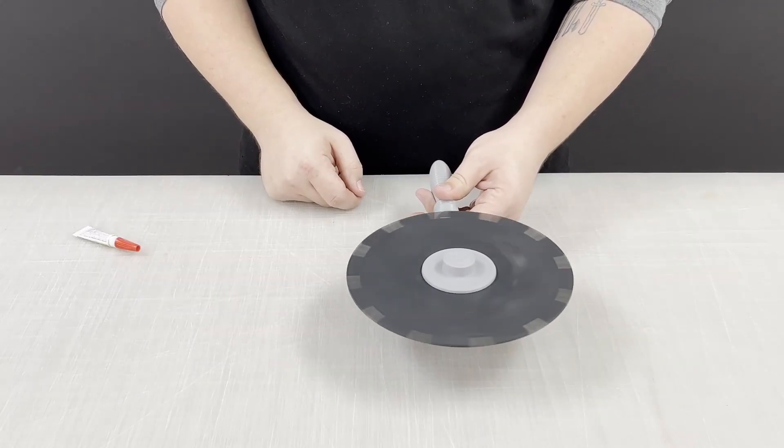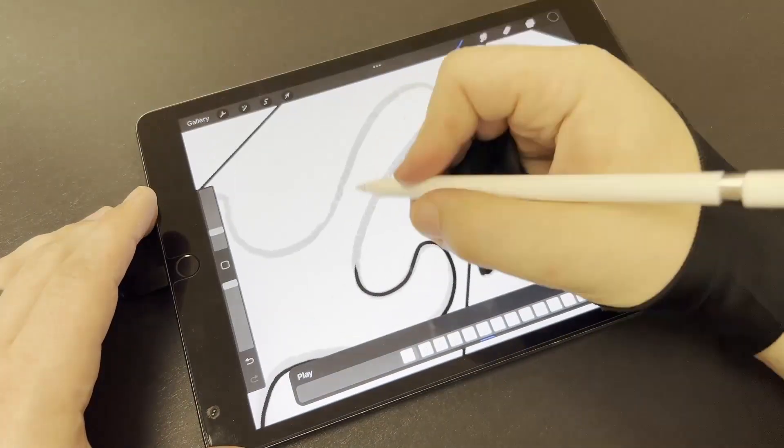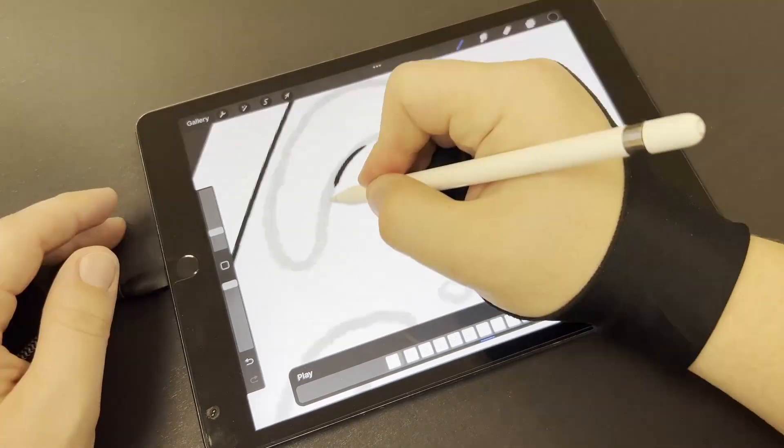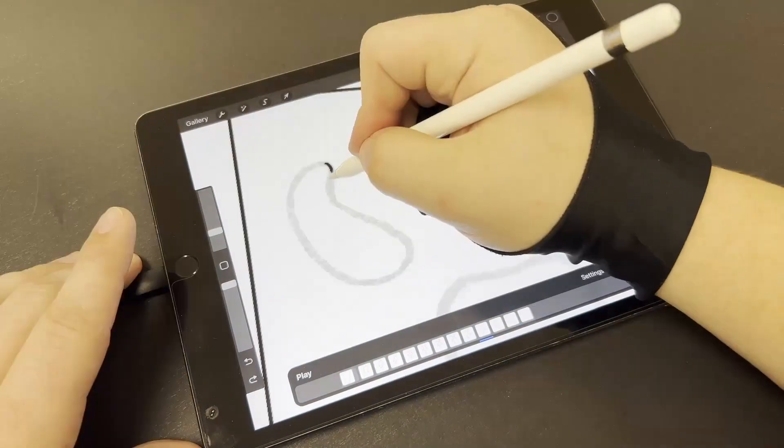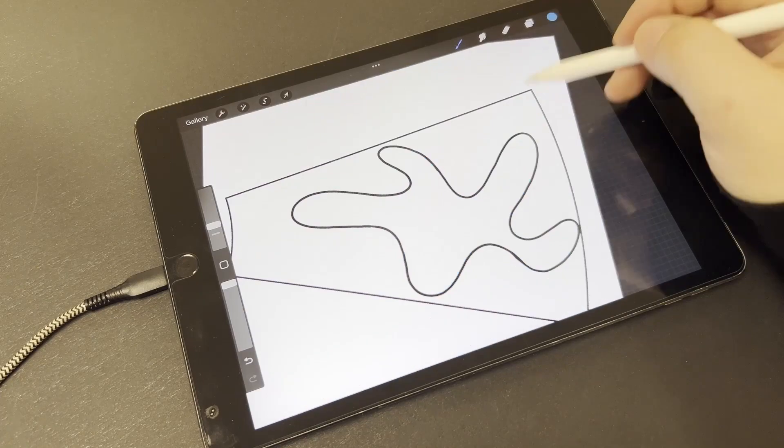Now that we have our phenakistoscope, let's get to animating. I'm using Procreate's animation feature to make this animation. Now, I'm not much of an animator, but after some experimentation, I think I've figured out how to best animate the disc.